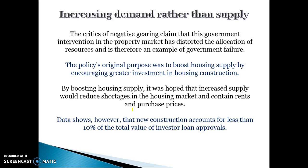But this caused problems. Critics of negative gearing claim that government intervention in the economy distorted the market. The intention was to boost housing supply by encouraging construction, which would increase supply, reduce housing shortages, and keep rental prices down because more people would be providing accommodation to the market — more supply means lower rent prices. However, the data shows there has been very little new construction. What people are doing is buying established houses and renting them out to get the negative gearing benefits.